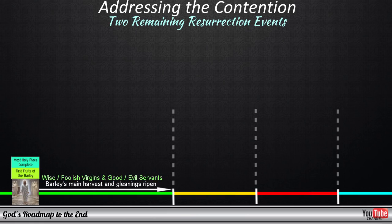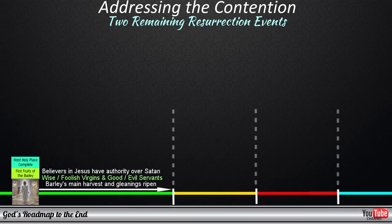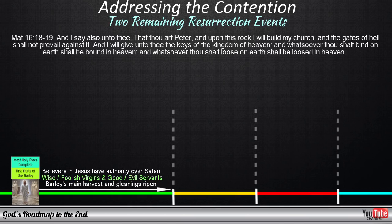From Jesus' resurrection all the way to a point in time where this resurrection event occurs, we have a dispensation during which very specific attributes apply to those who live in it. Jesus gave authority over the kingdom of Satan to those who would believe in him during this period, as seen in Matthew 16 verses 18 to 19, and allowed people to receive everlasting life by placing their faith in Jesus as being the Son of God who came to take away the sins of the world. And I say also unto thee, that thou art Peter, and upon this rock I will build my church, and the gates of hell shall not prevail against it. And I will give unto thee the keys of the kingdom of heaven, and whatsoever thou shalt bind on earth shall be bound in heaven, and whatsoever thou shalt loose on earth shall be loosed in heaven.